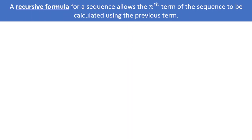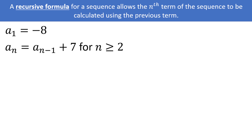An alternative and admittedly less useful way to write out a sequence is in what is called recursive form. This type of sequence formula allows the nth term of the sequence to be calculated using the previous term. Here is an example of a recursive formula for an arithmetic sequence, which is written in two parts. You must be given the first term — here, a sub 1 is equal to negative 8 — and a rule that allows you to calculate the next term. Here we have a sub n is equal to a sub (n minus 1) plus 7, for n greater than or equal to 2.